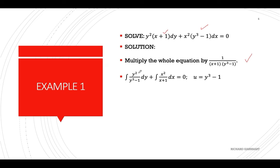Simplifying, for the first term we get y squared over (y cubed minus 1), and for the second term we have x squared over (x plus 1). Since the variables are now separated, we can integrate each term.